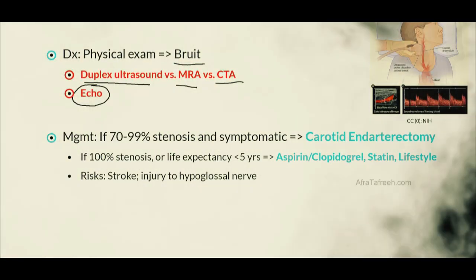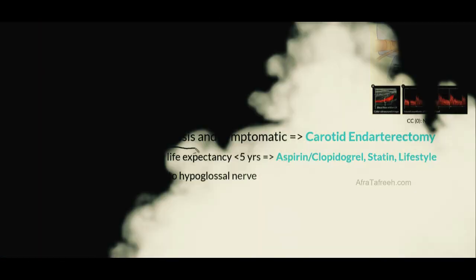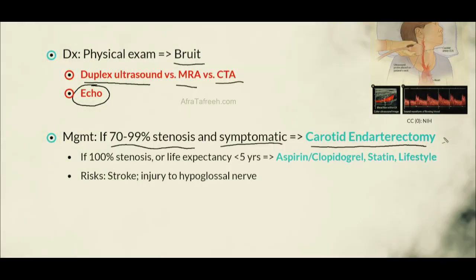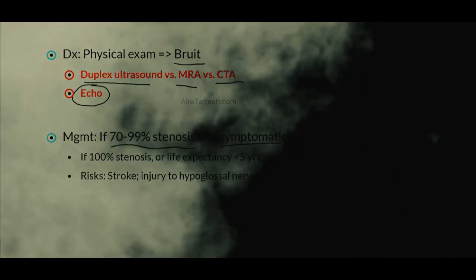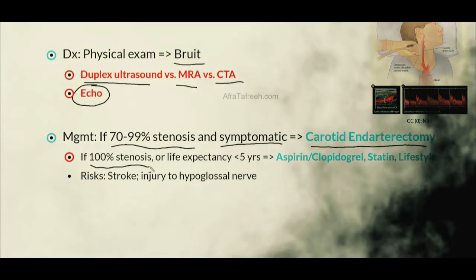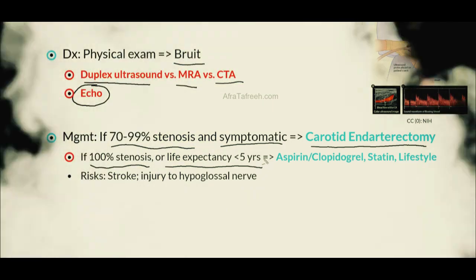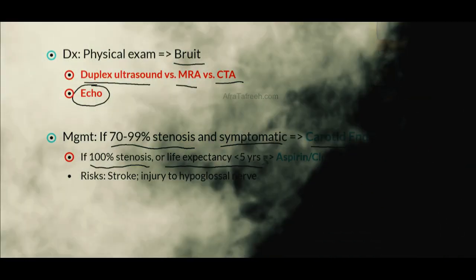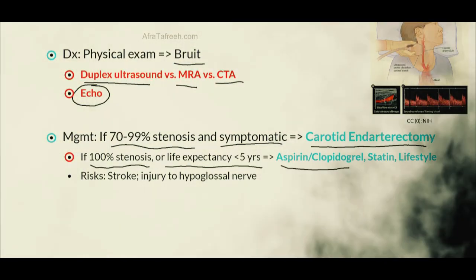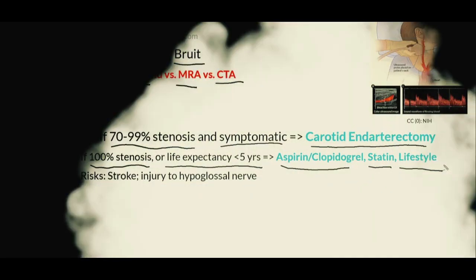A couple of key rules to keep in mind: if we have a patient with 70 to 99% stenosis of the carotid artery and that patient is symptomatic, we should ultimately perform a carotid endarterectomy. In this procedure, we essentially open up the patient's carotid artery and remove the plaque causing their symptoms. However, for patients who have 100% stenosis or a life expectancy less than 5 years, we want to avoid this high-risk procedure. In those patients, we provide antiplatelet therapy including aspirin or clopidogrel, as well as a statin and lifestyle modifications such as smoking cessation.